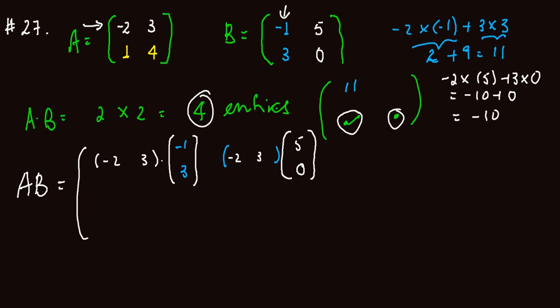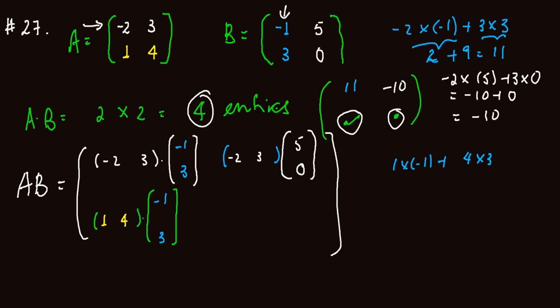The second row of the product will be the dot product of the second row of the first matrix, which is 1, 4, with the first column of the second matrix, which is minus 1, 3. This dot product is 1 times minus 1 plus 4 times 3, which equals minus 1 plus 12, giving us 11.